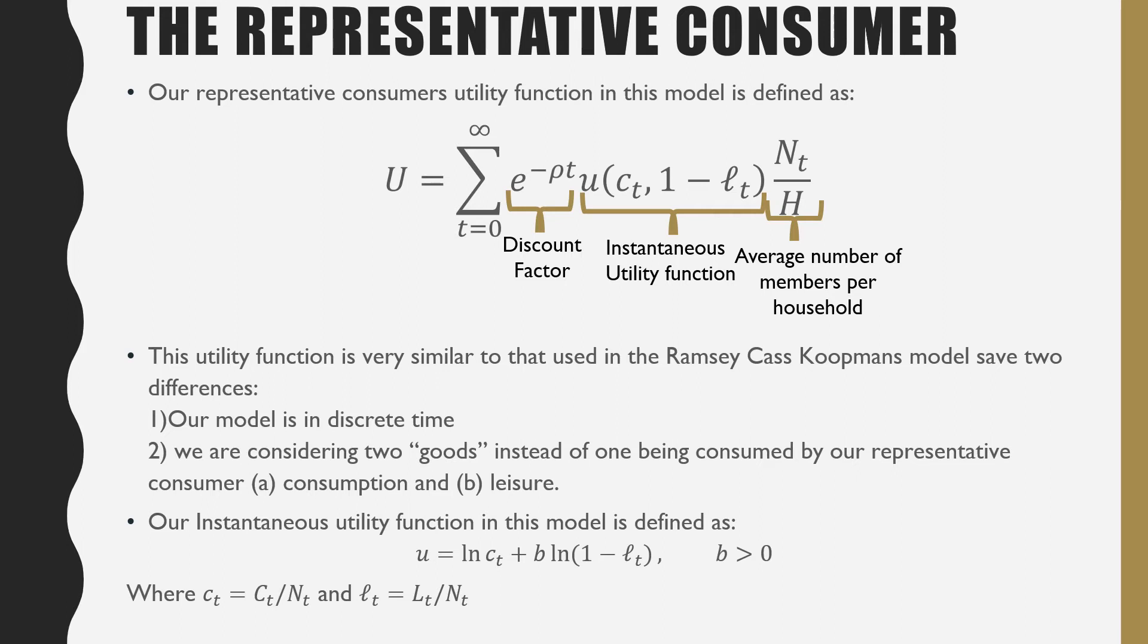Our instantaneous utility function in this model is defined as the following, where little u is a function of ln c_t plus b times ln(1 - l_t), where b is greater than 0. Where c_t is our average consumption in our population, and l_t is units of labor over our population, so that's labor force.